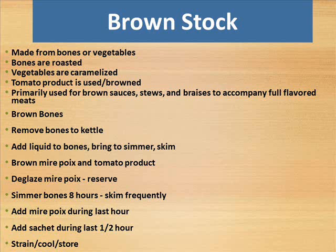Brown stock is made from bones or vegetables. Bones are roasted and vegetables are caramelized. Tomato product is used, browned. Primarily used for brown sauces, stews and braises to accompany full-flavored meats. Method: brown bones, remove bones to kettle, add liquid to bones, bring to simmer, skim. Brown mirepoix and tomato product, deglaze mirepoix and reserve. Simmer bones 8 hours, skimming frequently. Add mirepoix during last hour, add sachet during last half hour. Strain, cool and store.